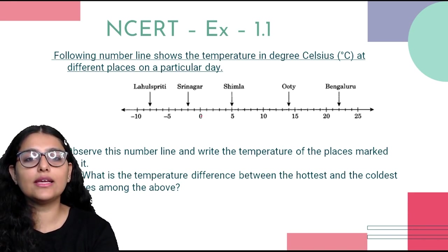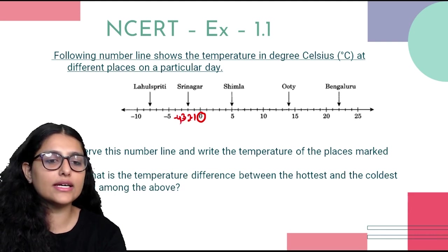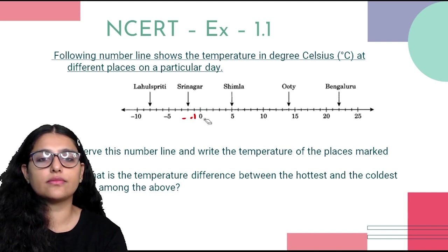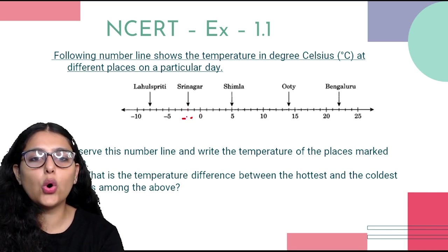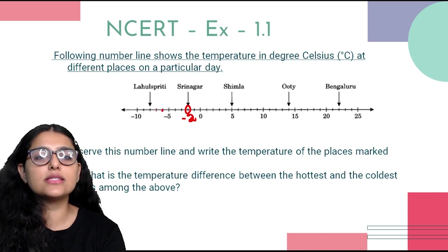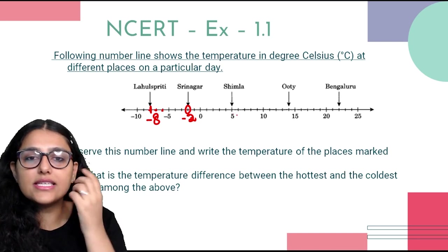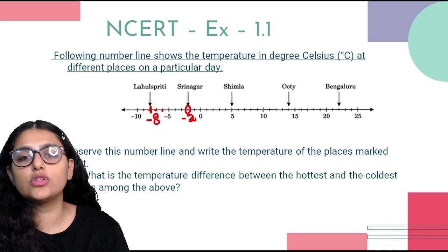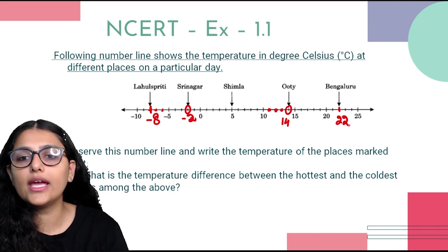Reading from the number line: Srinagar is at minus 2°C, Lahul Spiti is at minus 8°C, Shimla is at 5°C, Ooty is at 14°C, and Bangalore is at 22°C.